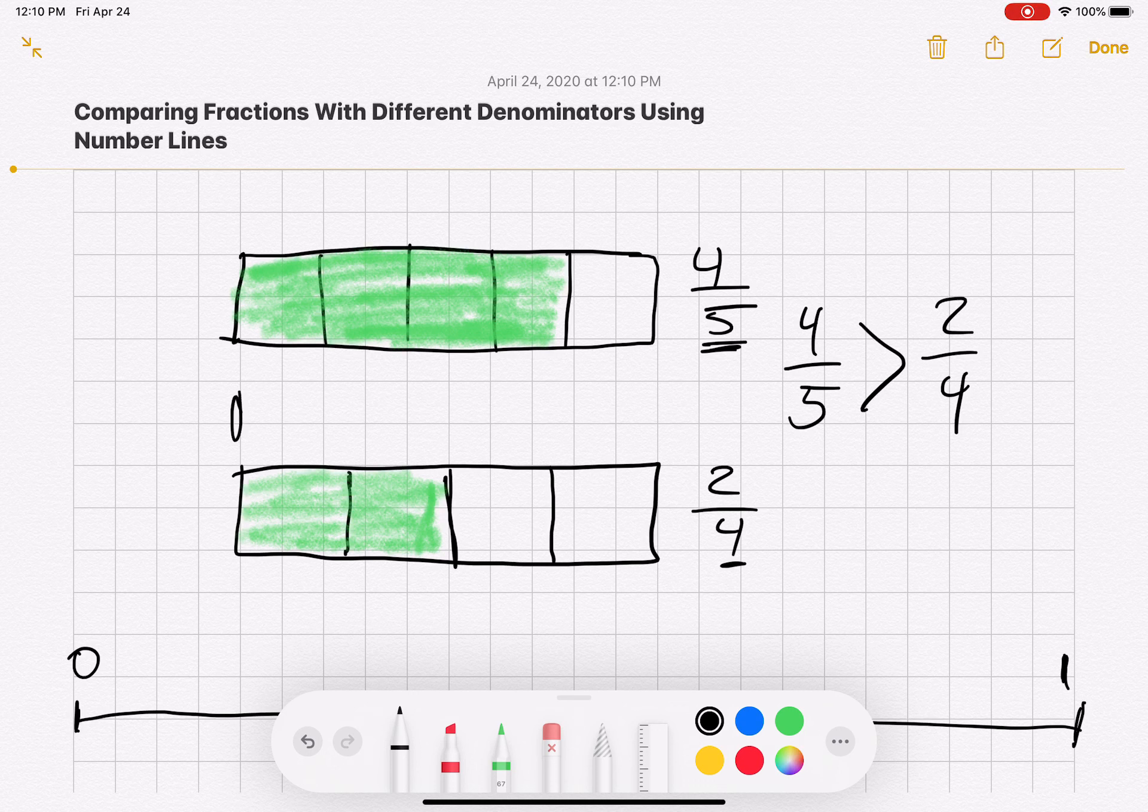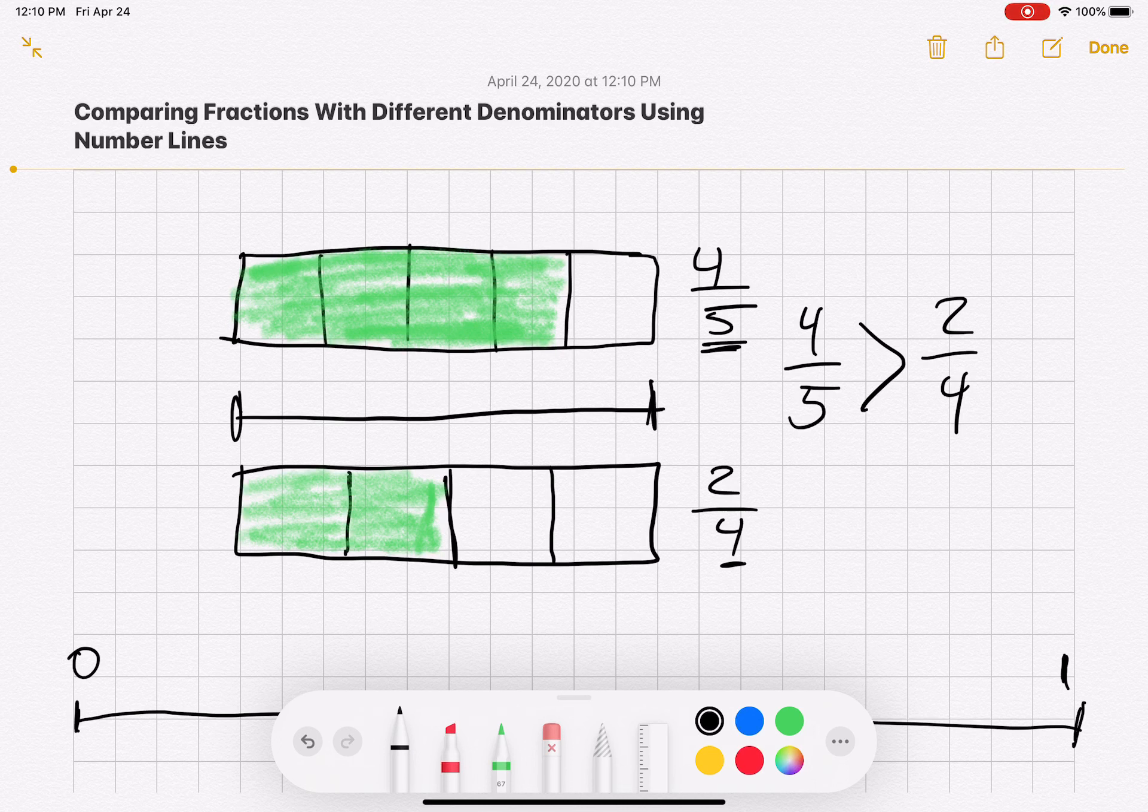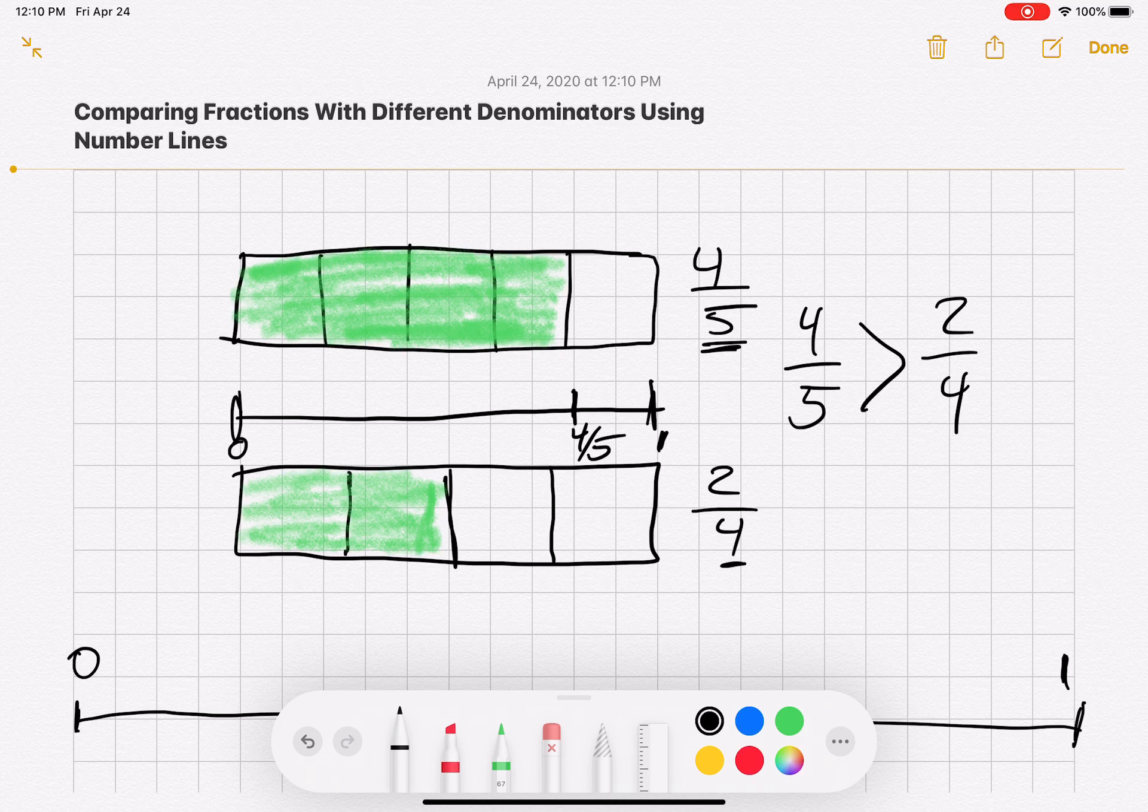Now if we add a number line in between these two, I'm going to label the fractions here. So this would be four over five, this is one whole, this is zero over here, and then I have two fourths would fit in here.